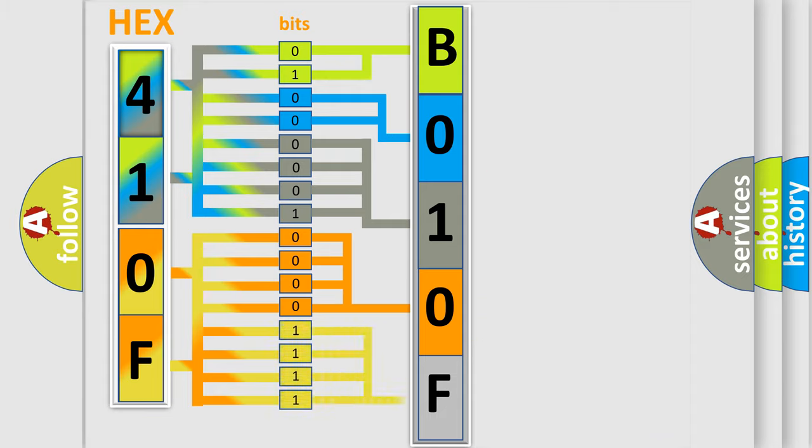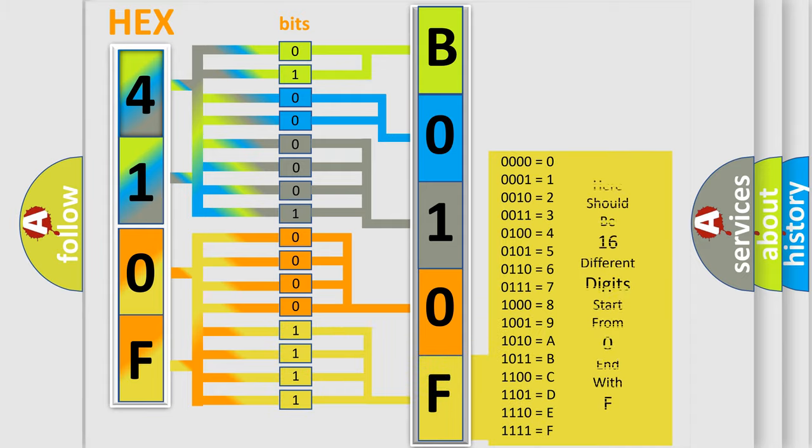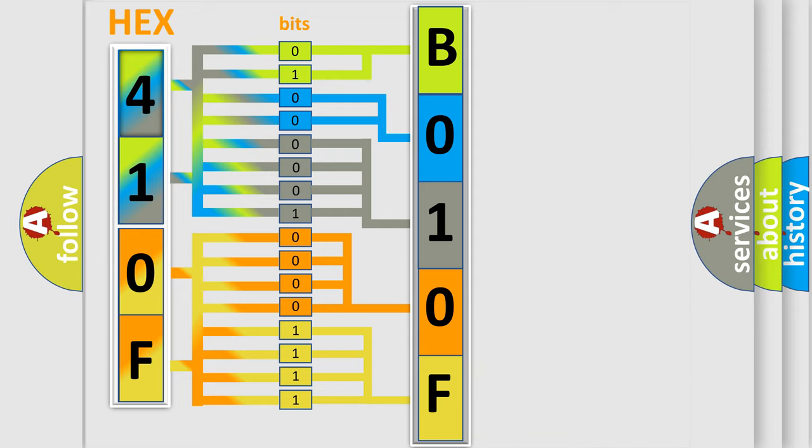A single byte conceals 256 possible combinations. We now know in what way the diagnostic tool translates the received information into a more comprehensible format.